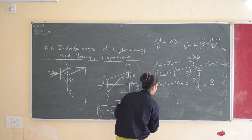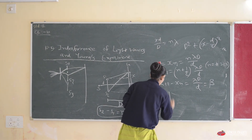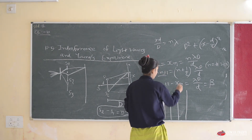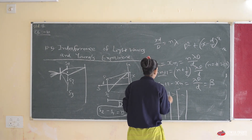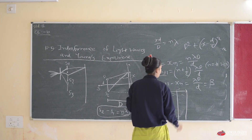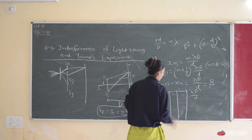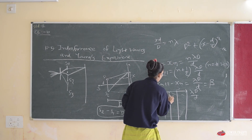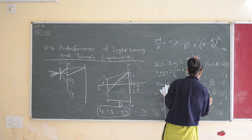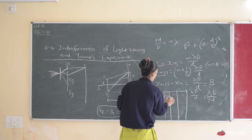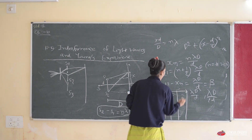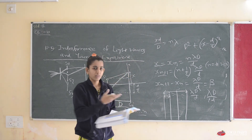Now consider the dark and bright regions. The chalk lines represent dark screens and the region in between is the bright screen. The distance between bright lines is λD/d. The distance between a dark line and the adjacent bright line is half of that: λD/(2d).